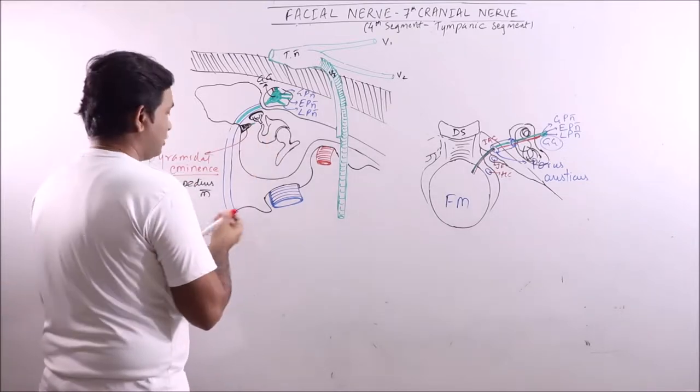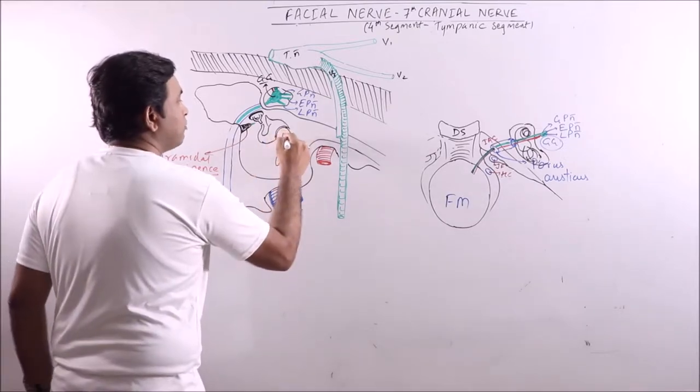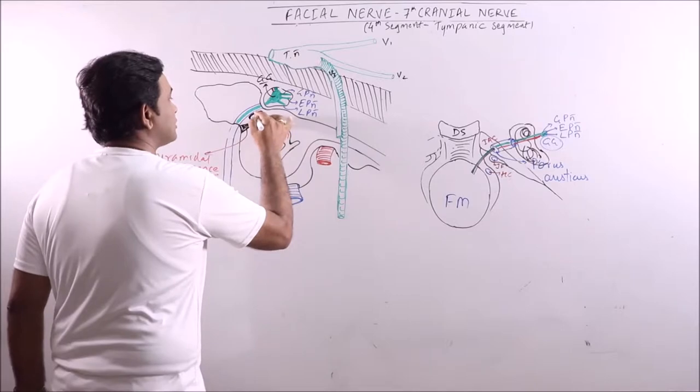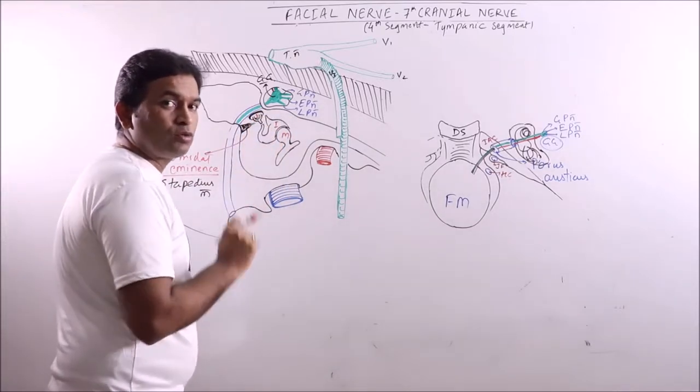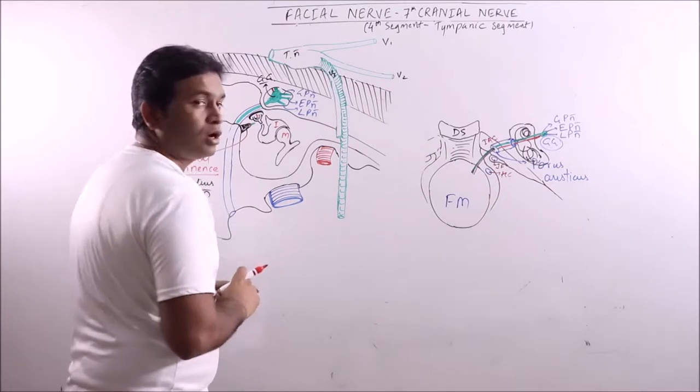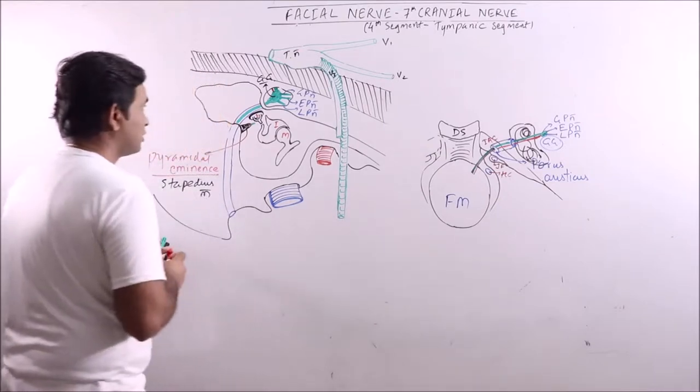These are the three ear ossicles: malleus, incus, and stapes. This is the foot plate of stapes which rest over the oval window or the fenestra ovalis.